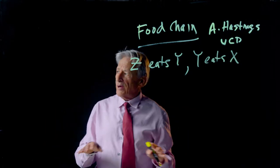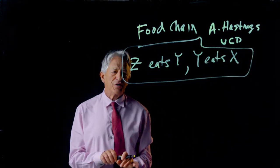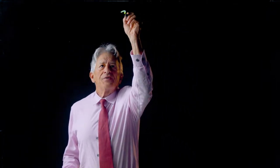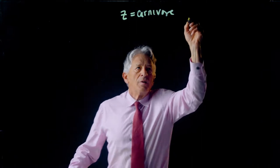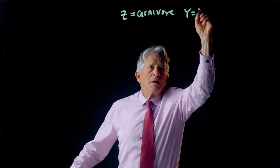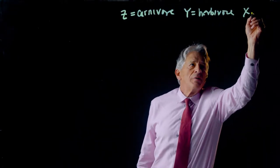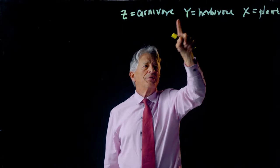So how are we going to make this model is really by a pretty straightforward extension of the Holling-Tanner model. So we're going to lay out, following Hastings work, a three variable model. Where basically, we're going to think of Z as a carnivore, Y as a herbivore, and X as a plant. So the herbivores eat the plants, and the carnivores eat the herbivores.